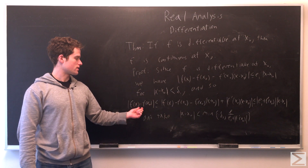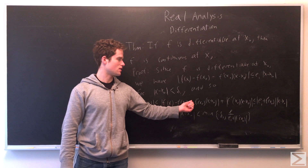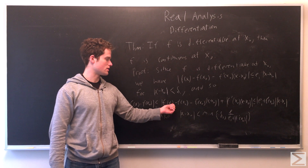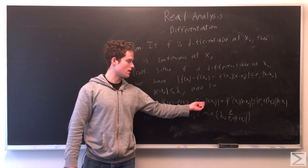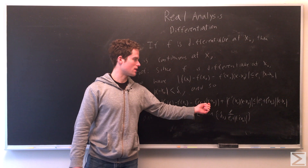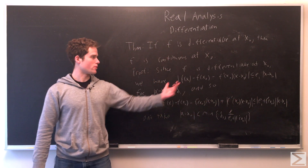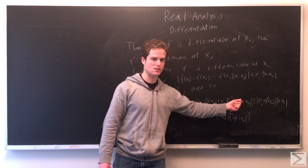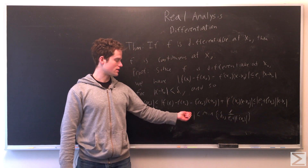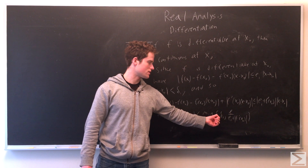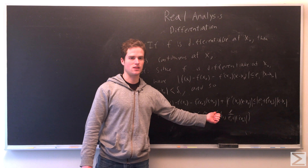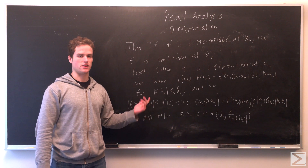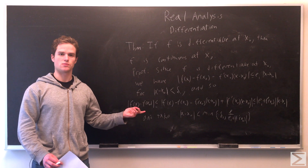So f(x) minus f(x₀) equals f(x) minus f(x₀) minus f prime(x₀)(x minus x₀) plus f prime(x₀)(x minus x₀), which by the triangle inequality is less than or equal to |f(x) minus f(x₀) minus f prime(x₀)(x minus x₀)| plus |f prime(x₀)| · |x minus x₀|. From our previous inequality, this is less than or equal to (ε₁ + |f prime(x₀)|)|x minus x₀|. Taking |x minus x₀| less than the minimum of δ₁ or ε over (ε₁ + |f prime(x₀)|) gives us |f(x) minus f(x₀)| less than ε for any ε greater than zero. This proves that f is continuous at x₀.